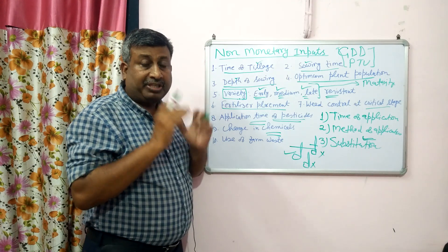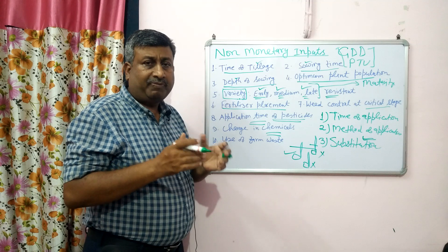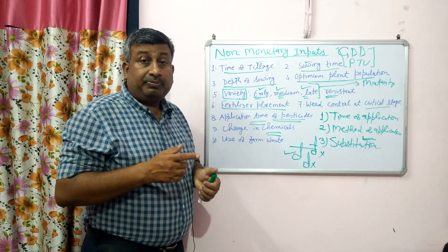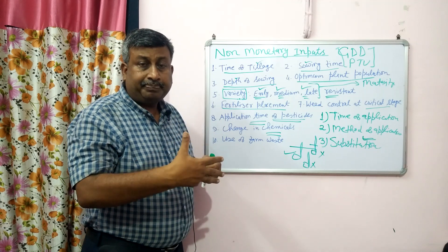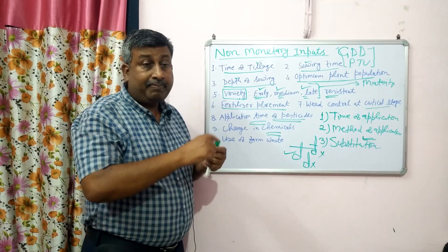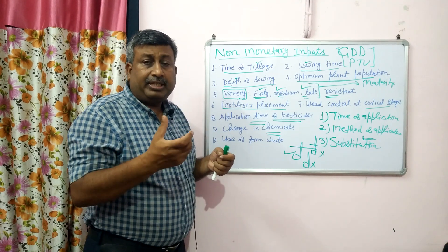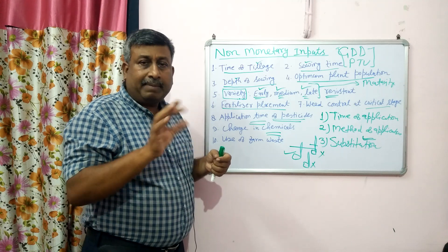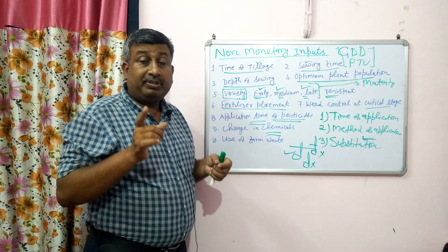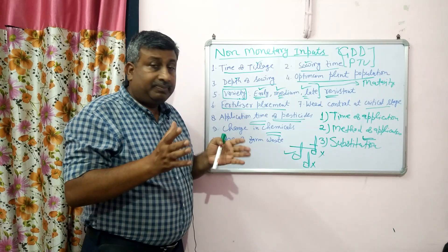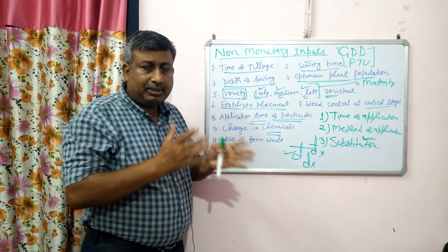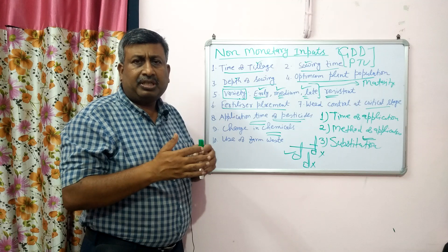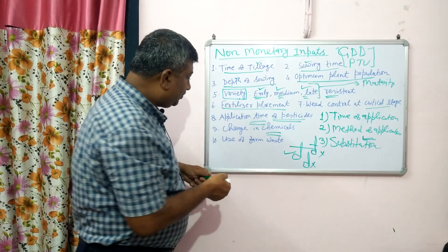Then change in chemicals. There are different modes of action of herbicides — narrow spectrum or broad spectrum. If we keep using the same mode of action herbicide, it creates resistance in weeds, and similarly resistance in insects. We should change the chemical and use one with a broad spectrum and a different mode of action. This is chemical substitution, and there is no significant price difference between chemicals of the same class — only the name changes.